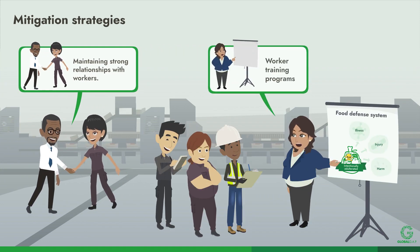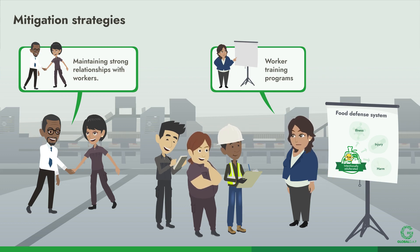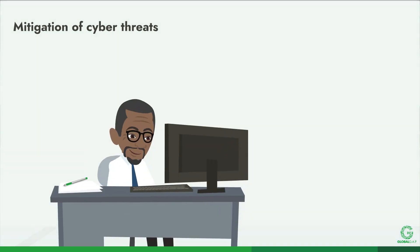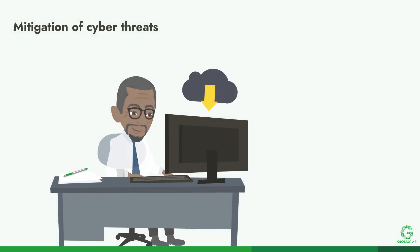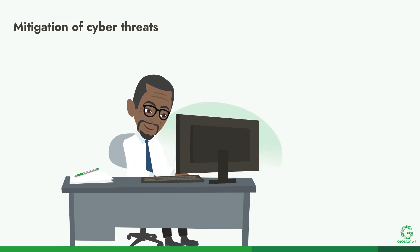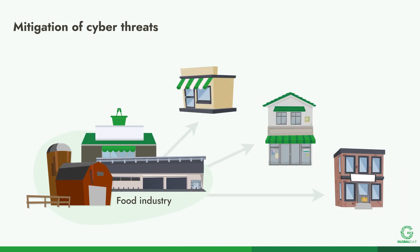Maintaining strong relationships with trusted workers is also an important strategy. Worker training programs have been shown to be effective and are a great first line of defense against intentional adulteration. Recently, the mitigation of cyber threats has also arisen as a necessary element to consider in food defense systems, as the food industry is preparing to offer more guidance on this emerging topic as businesses become increasingly reliant on technological solutions for their daily operations.